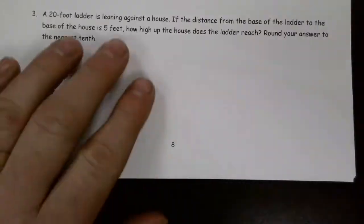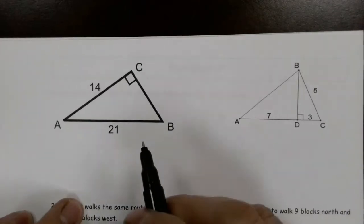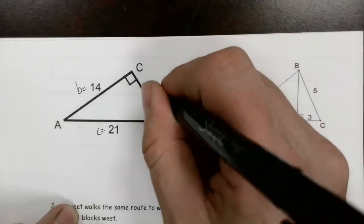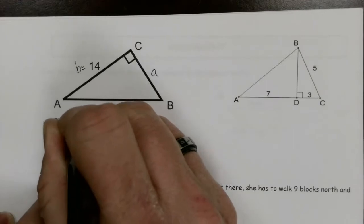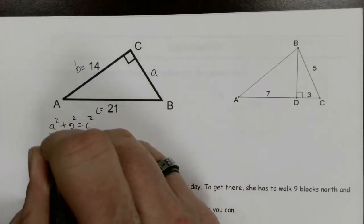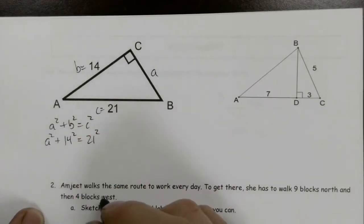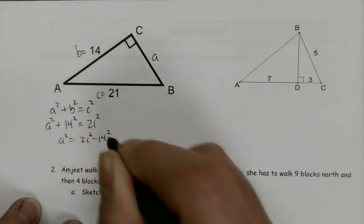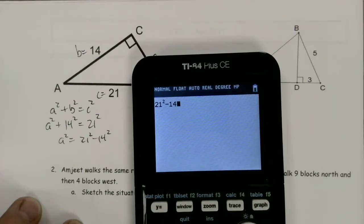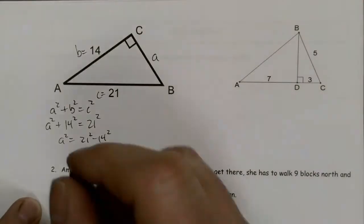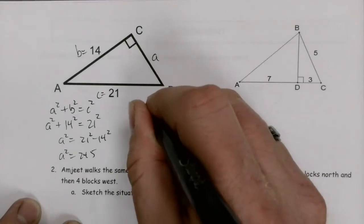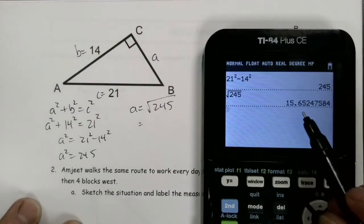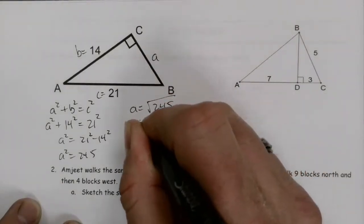This triangle is clearly labeled: b is one leg, c is the other, and the hypotenuse is labeled. We're missing little a. We know a squared plus b squared equals c squared, b is 14 and c is 21. So a squared plus 14 squared equals 21 squared. Subtracting 14 squared from both sides: 21 squared minus 14 squared on the calculator gives 245. So a squared equals 245, and the square root of 245 is approximately 15.7 units.